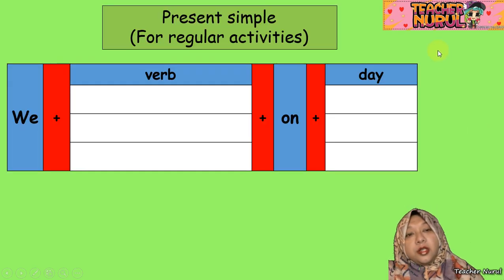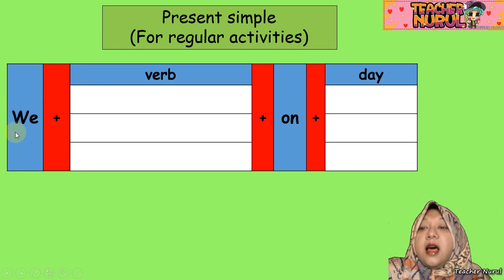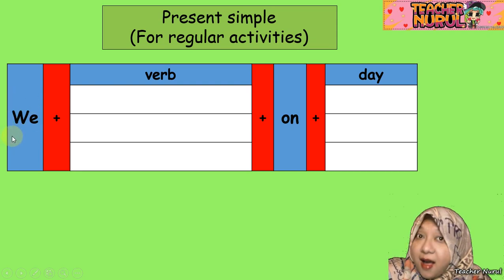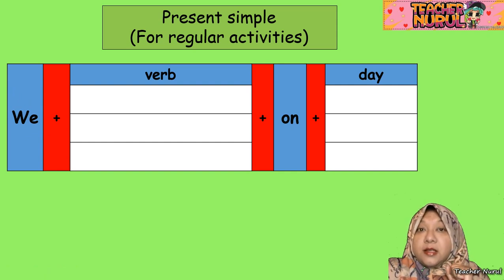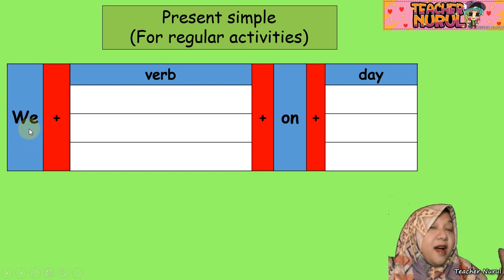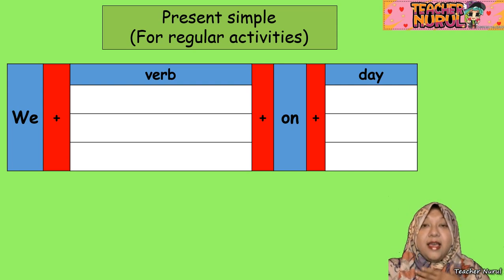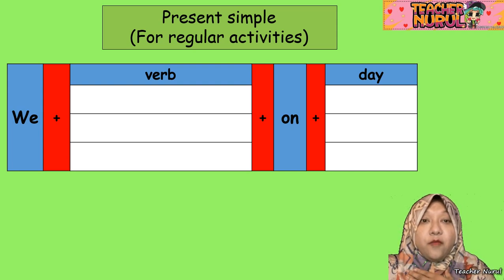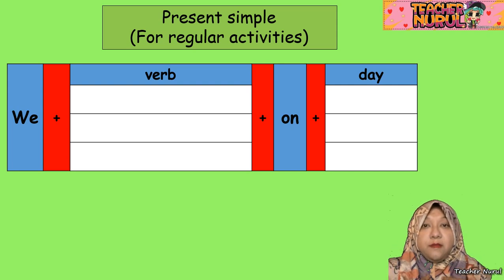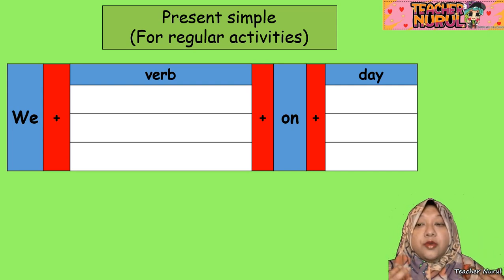Let's go to our grammar of the day. Again, we've learned the present simple for regular activities. Last week we learned using the subject 'I' — only one person. But this week we are going to use 'we' as the subject. 'We' means my friends and I, my family and I — more than one person. 'I' is only one person: 'I play football.' But when we have more than one — my friends and I, maybe two or three of us — we must use 'we'.